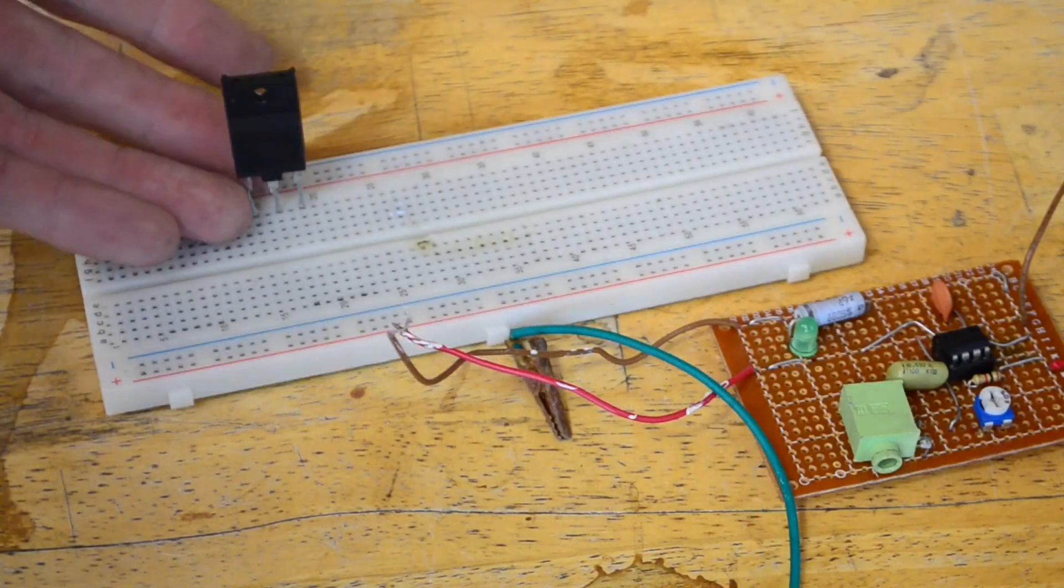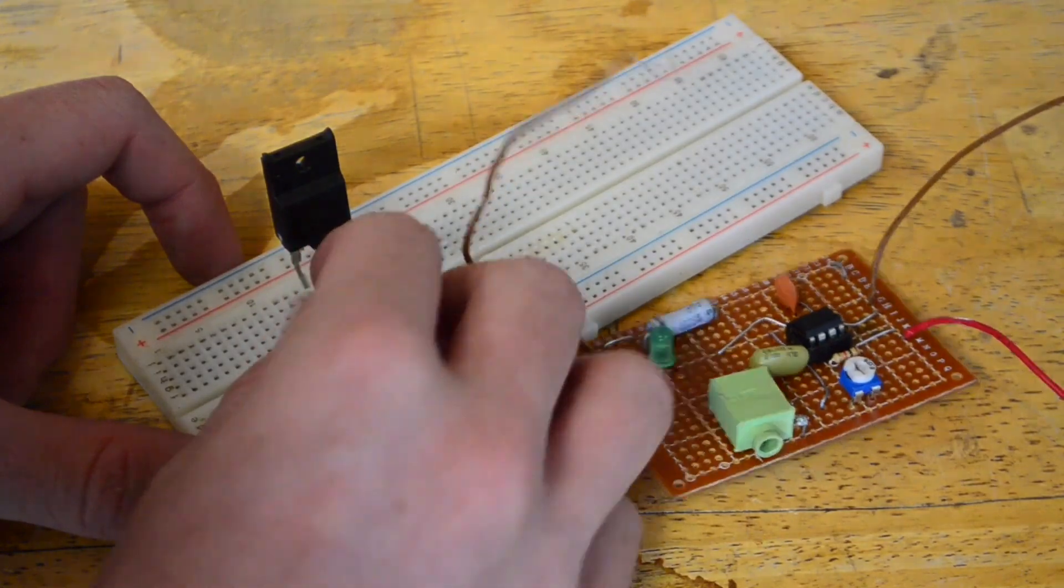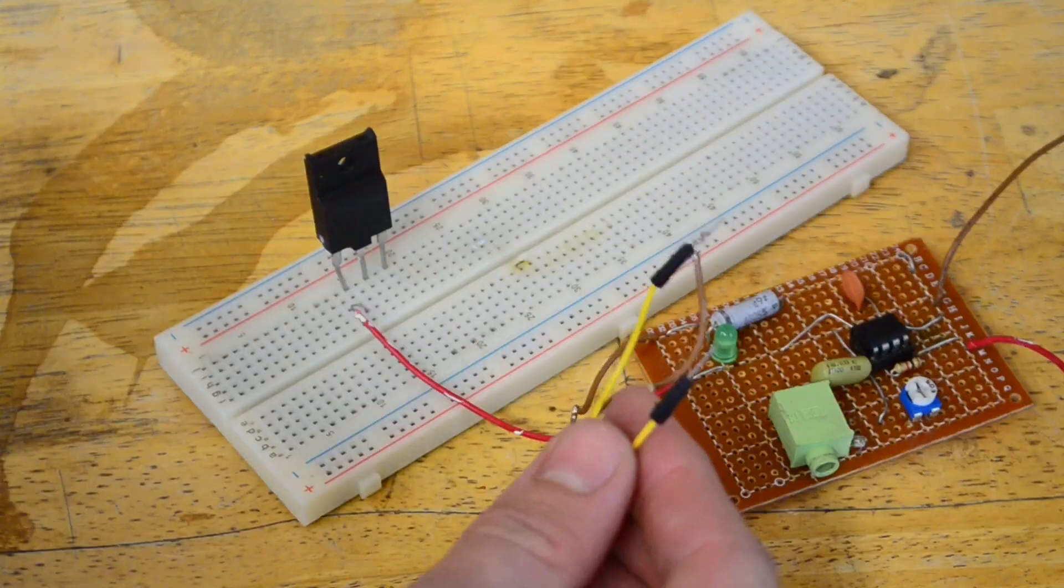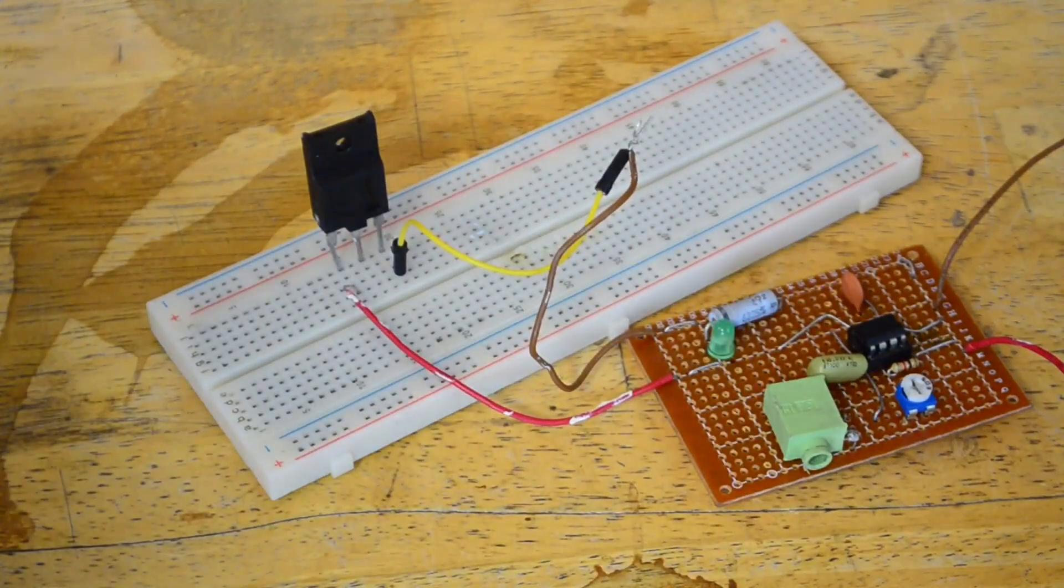I'm going to enter this MOSFET I salvaged from a TV. By connecting the positive output of my frequency generator to the base of the MOSFET and the ground to the emitter, we should have made a pseudo amplifier.